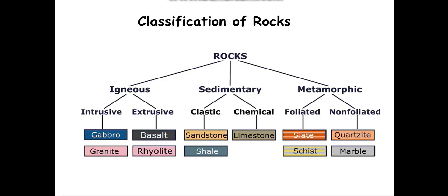Classification of rocks: rocks are classified into igneous, sedimentary, and metamorphic. Each has its own types — igneous has intrusive and extrusive. Sedimentary has clastic and chemical types, and examples are given. Metamorphic has foliated and non-foliated types, with examples given.